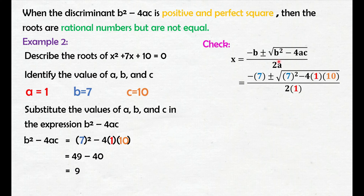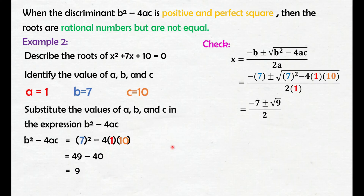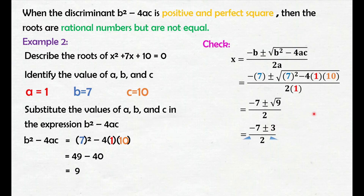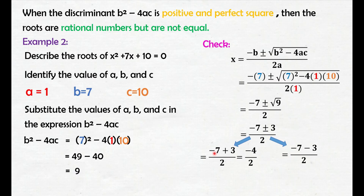Substitute lang natin yung mga given values. Yung b natin is 7, yung a is 1, and yung c is 10. Simplify: negative times 7, that is negative 7. Yung discriminant, nasolve na natin siya — 9. Simplify the square root of 9, that is 3. I-separate natin yung positive sa negative: negative 7 plus 3, that is negative 4. Negative 4 divided by 2, that is negative 2.